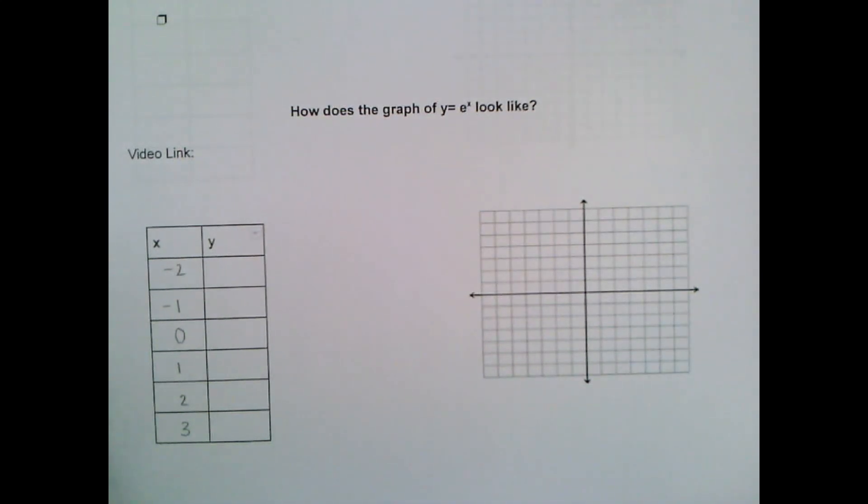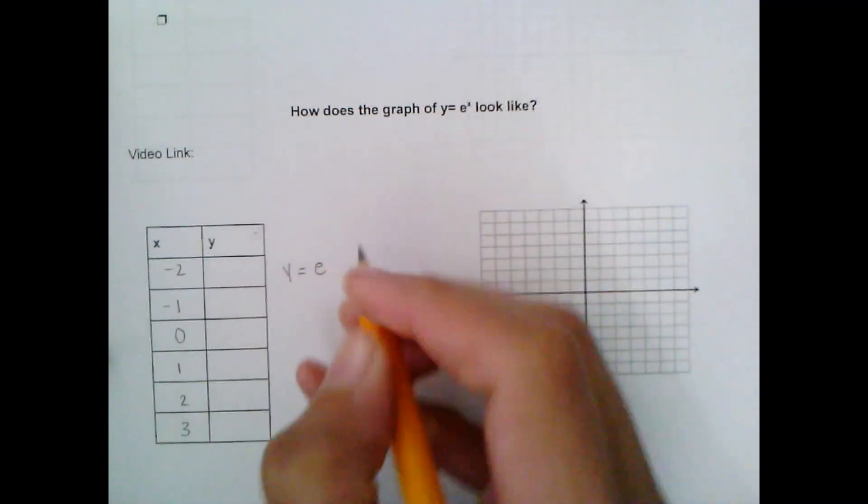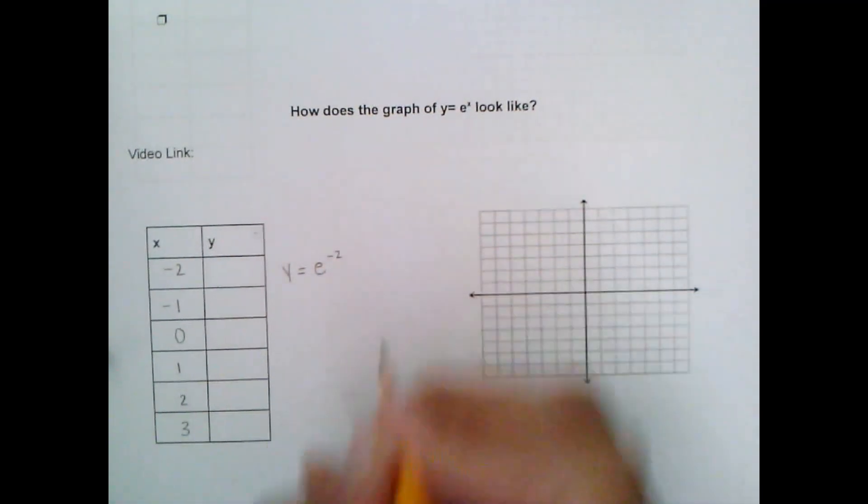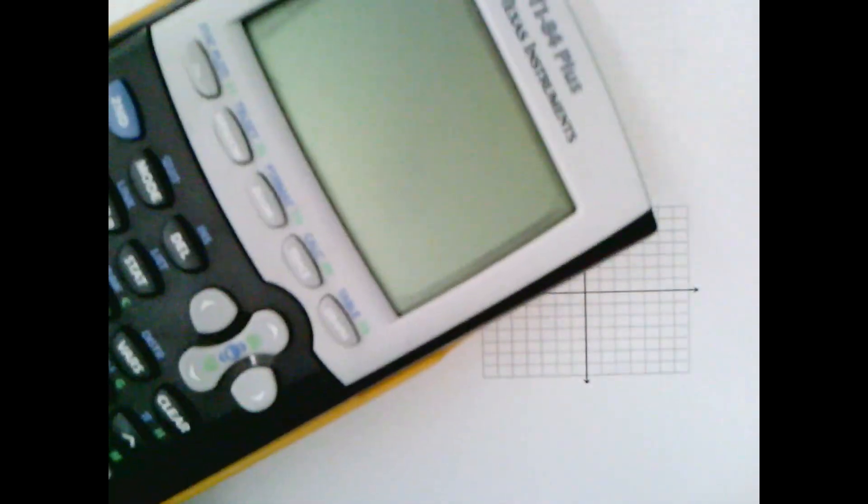Alright, so now we've got to use substitution. So we know my function is y equals e to the x. Instead of x though, I'm going to substitute negative 2 here. Great, so now I just got to know what that number is. Well, I don't know. So here's where a handy-dandy calculator comes in.